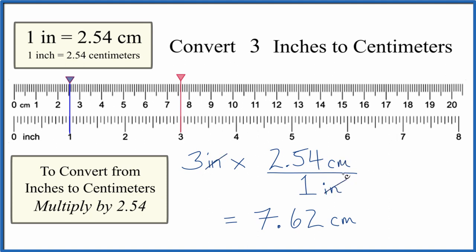When we multiply, inches cancel out, we're left with centimeters. So three inches is equal to 7.62 centimeters.